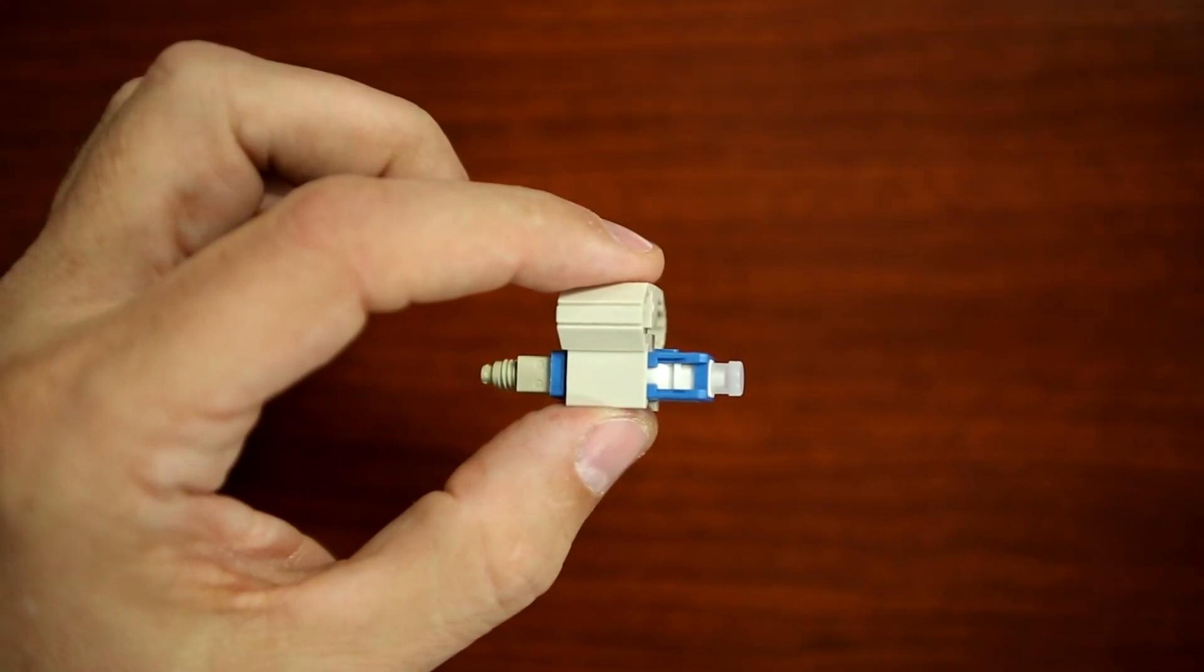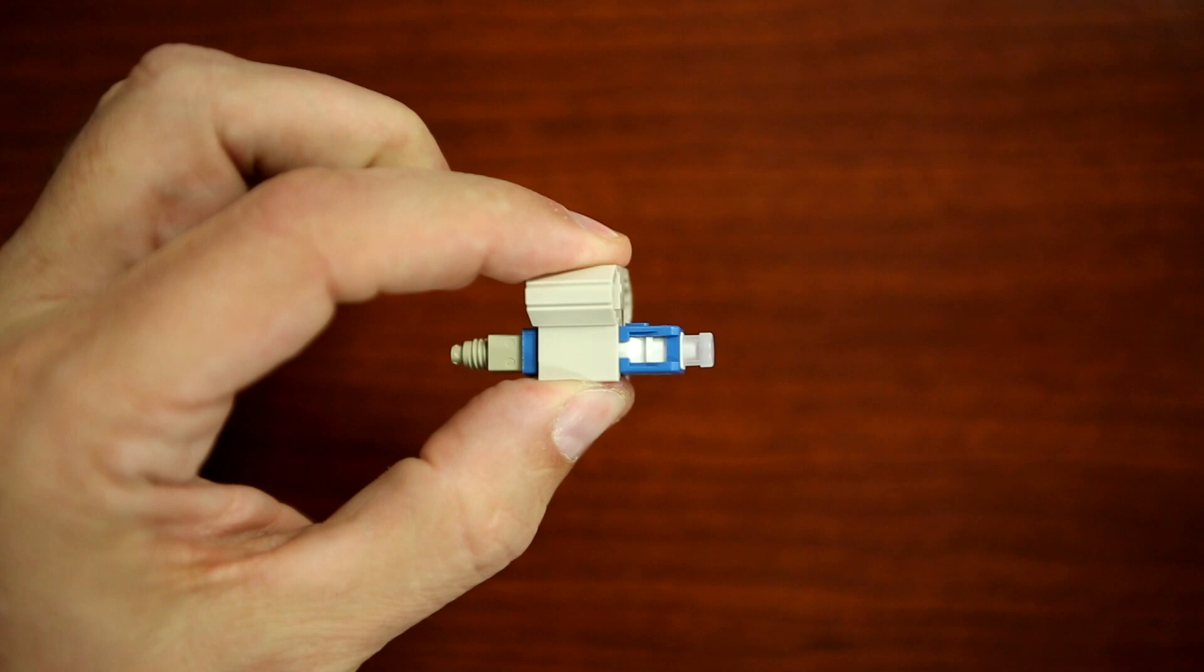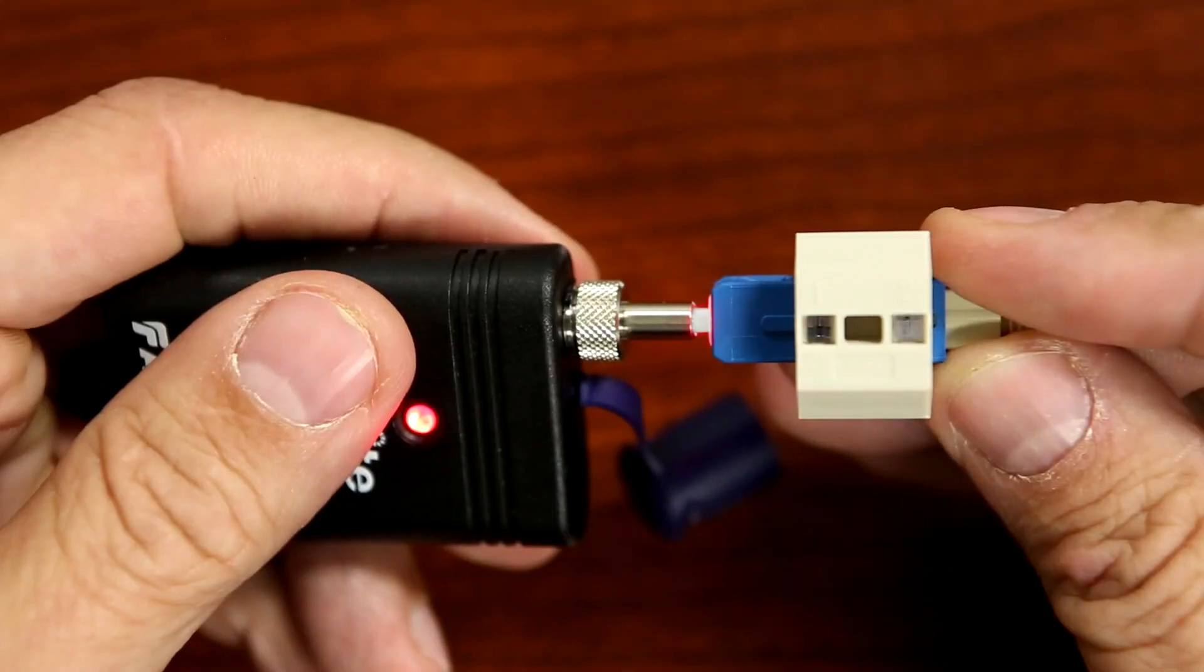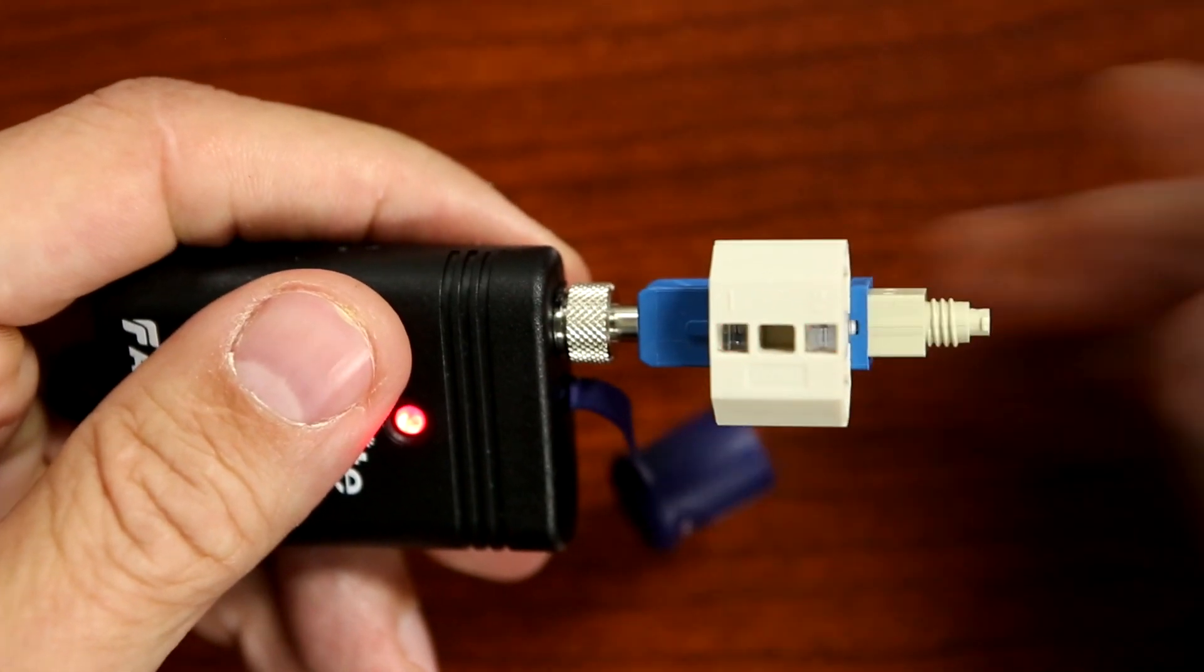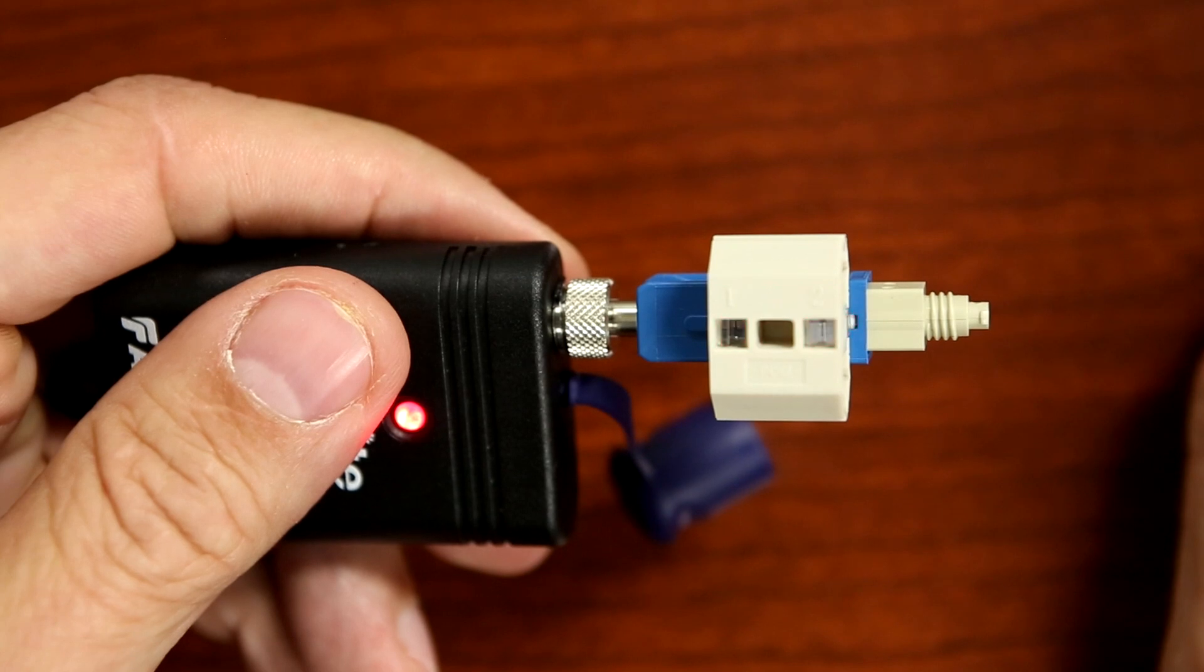Ensure the wedge clip is fully engaged by squeezing the top and bottom together. After removing the connector's dust cap, insert it into the visual fault identifier.